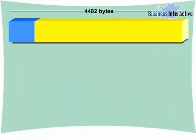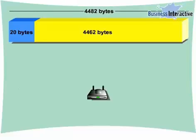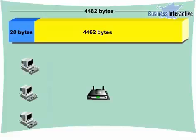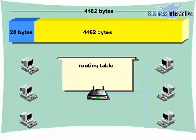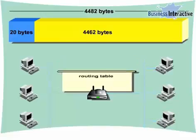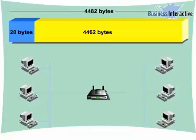How Fragmentation Works: Consider a datagram of 4482 bytes in which 20 bytes are header and 4462 are data to be sent across a network allowing only 1500 MTU. The router first checks that the DF flag of that datagram can be fragmented or not.